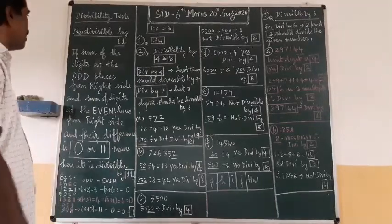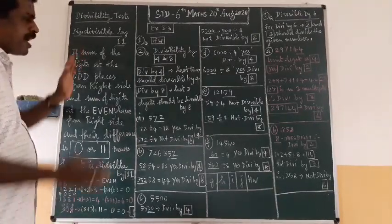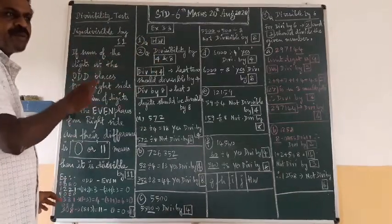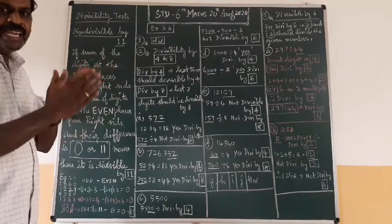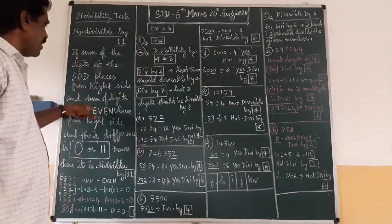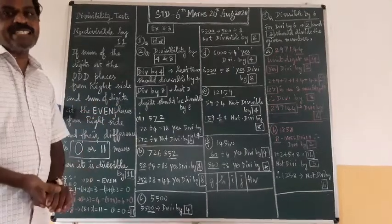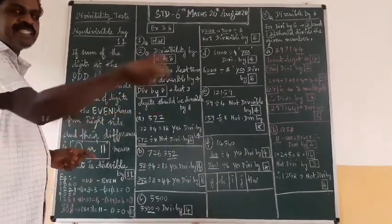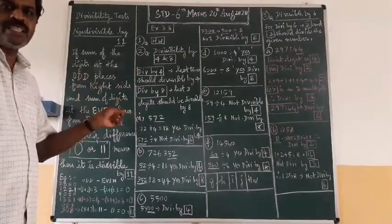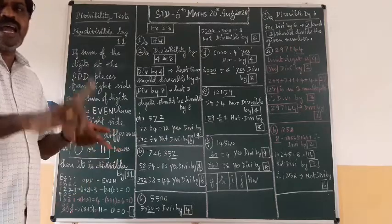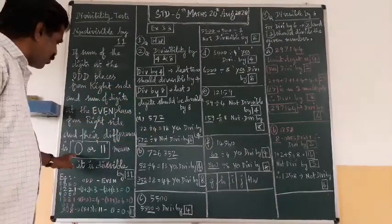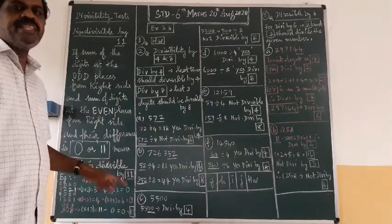Let me repeat: add the digits at odd places — 1st, 3rd, 5th — from the right side of the number. Then add the digits at even places — 2nd, 4th — from the right. Find the difference between the odd total and the even total. If that difference is zero or a multiple of eleven, the number is divisible by eleven.